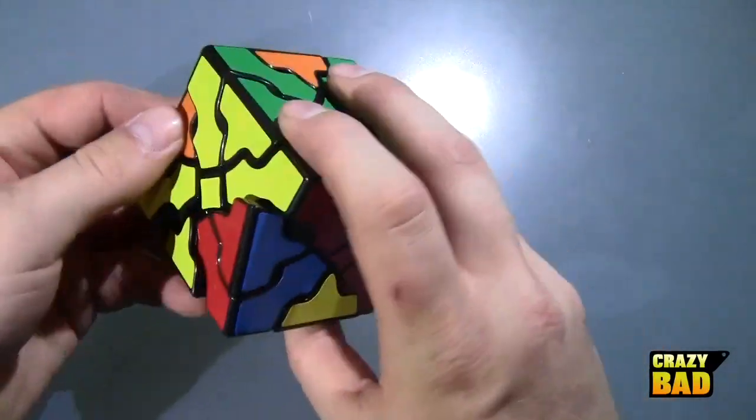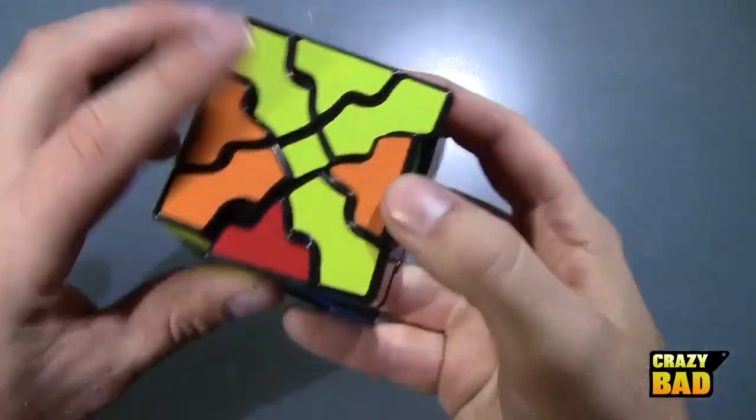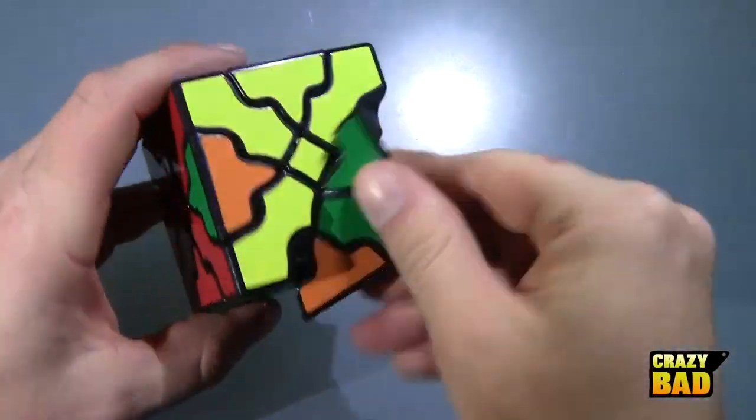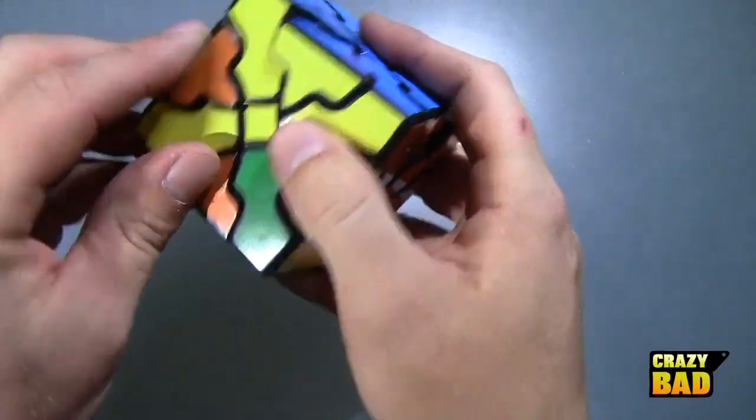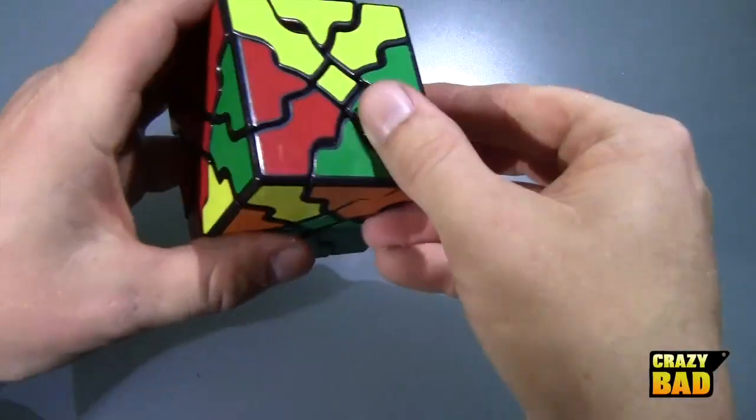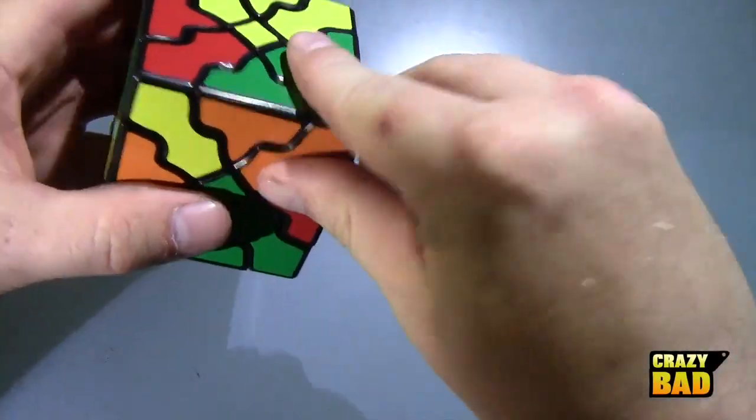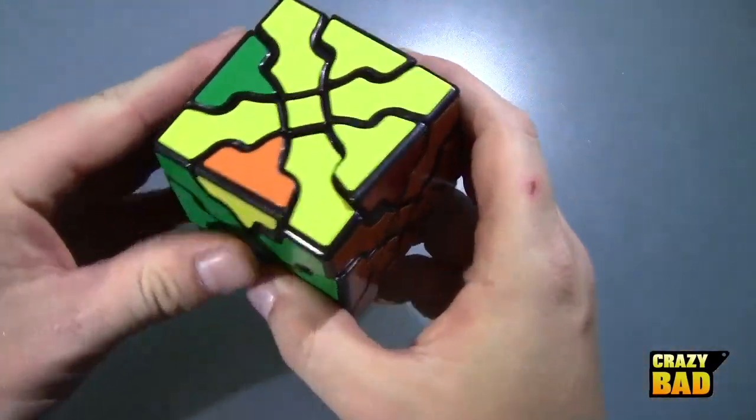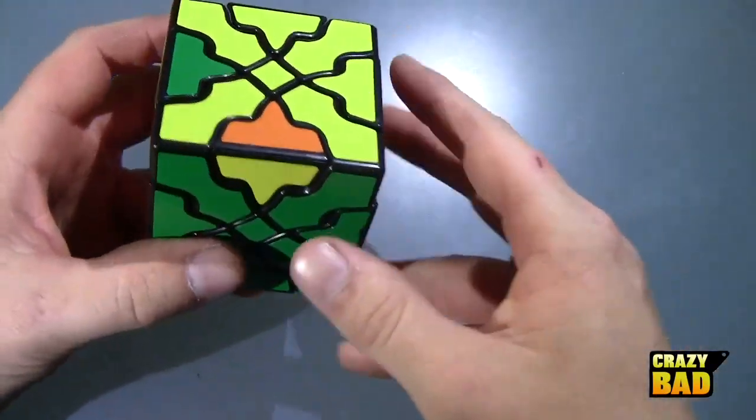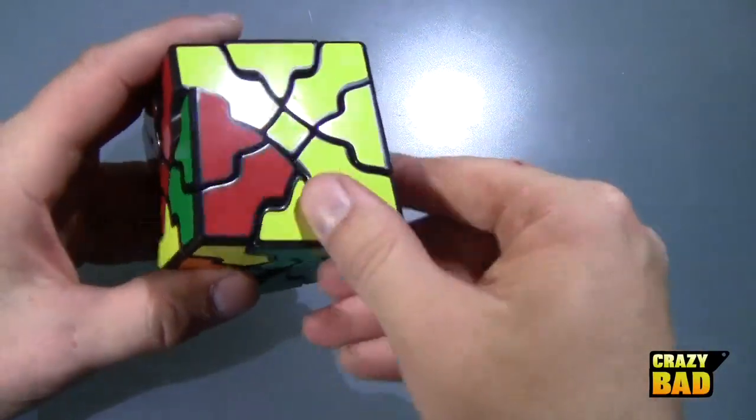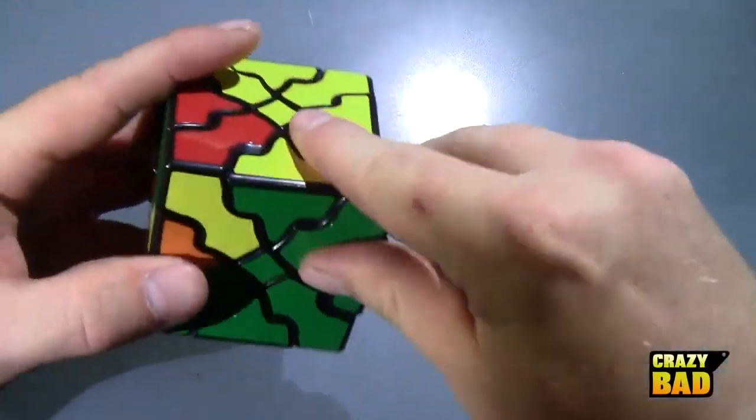And then green and red go there, and then we can put this one in here, and we will actually swap these around, and then put this one, come on, in here.